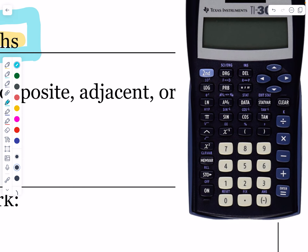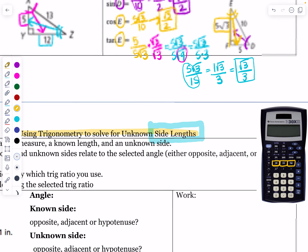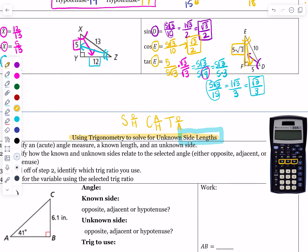Looking at our calculator, it has sine, cosine, and tangent buttons right next to each other — these are the ones we have in class. The first thing we're always going to write on our notes, assignments, and tests is SOHCAHTOA. This helps remember the ratios: O is opposite, H is hypotenuse, A is adjacent — and these sync up with sine, cosine, and tangent.